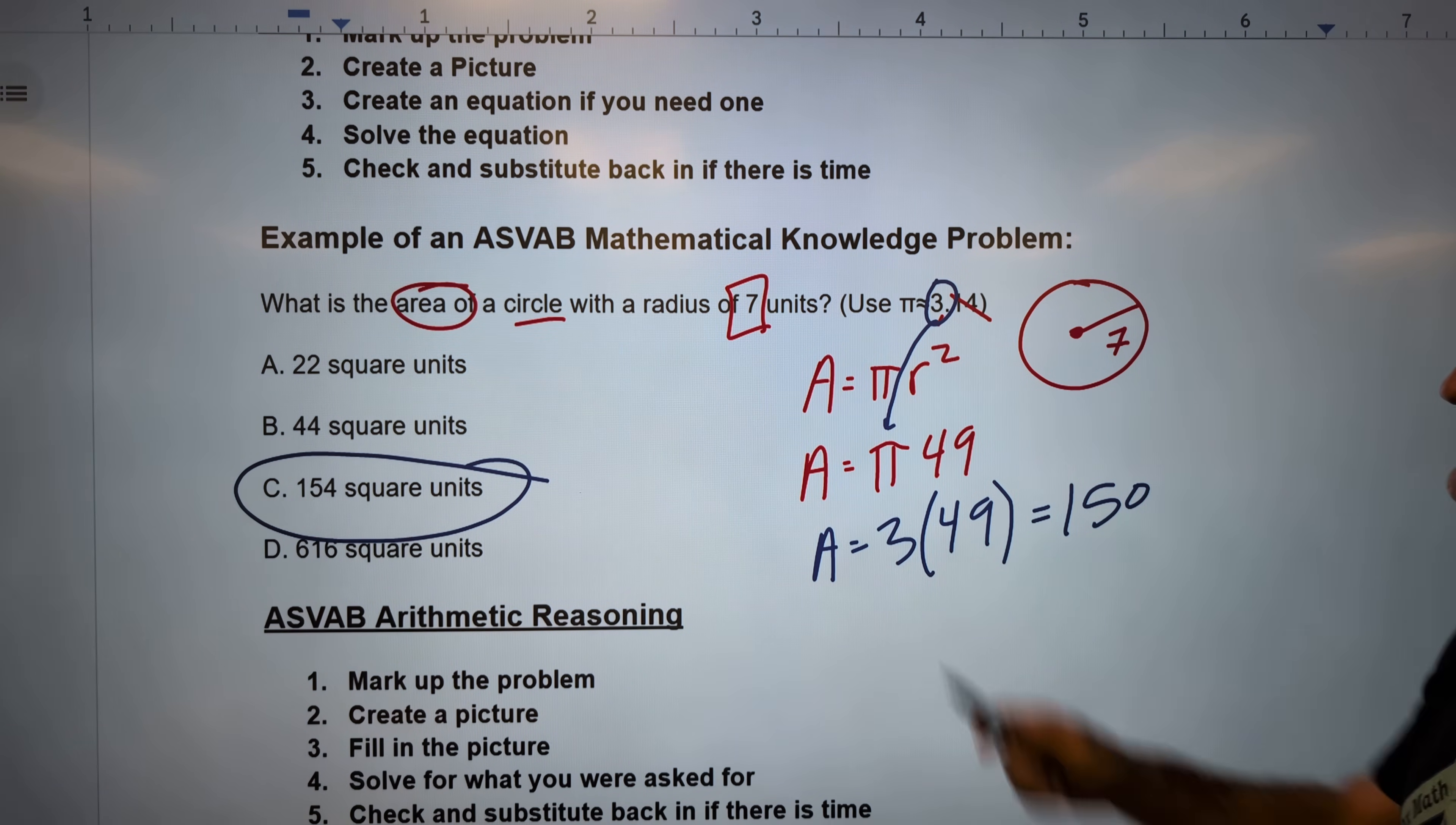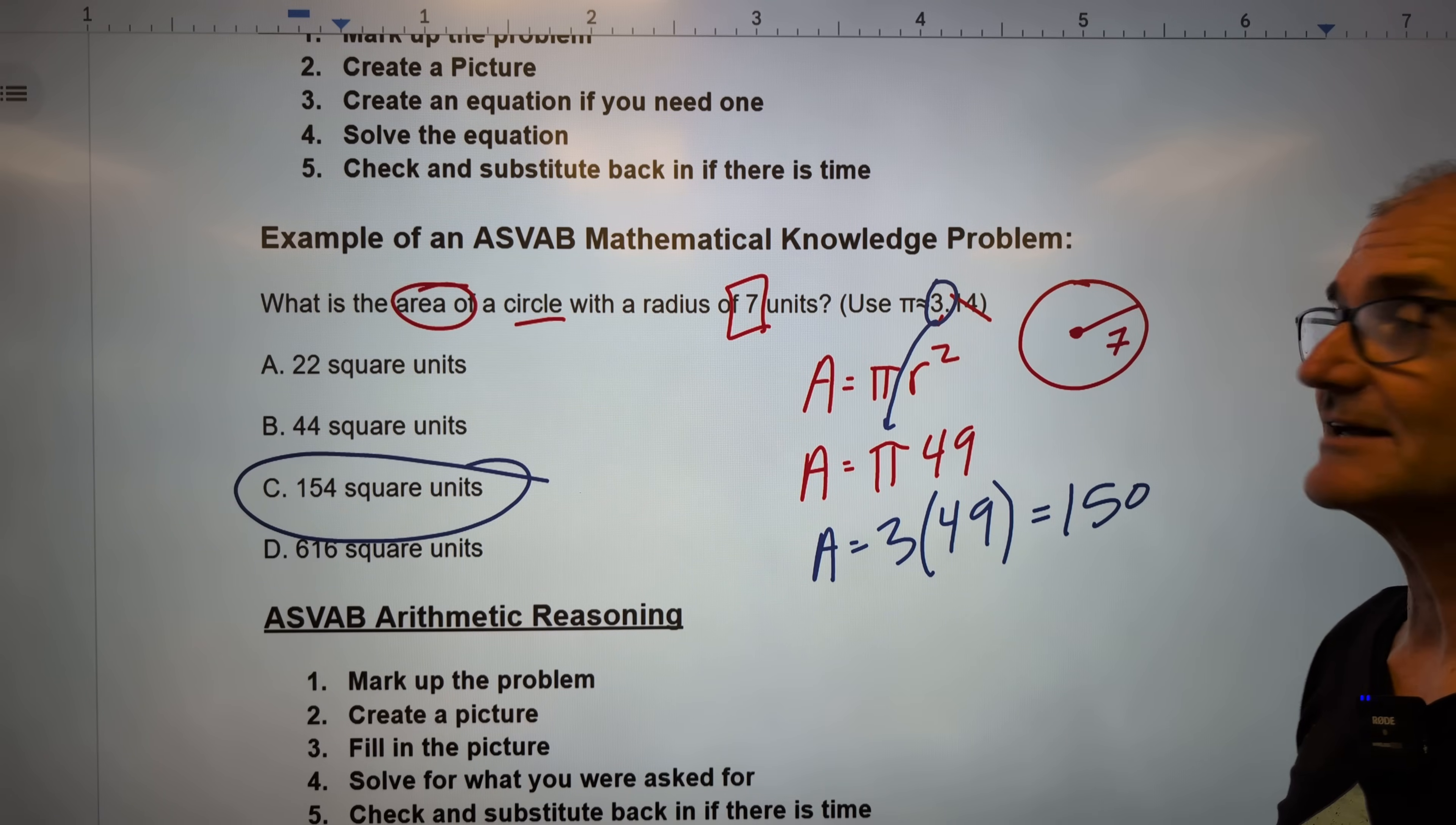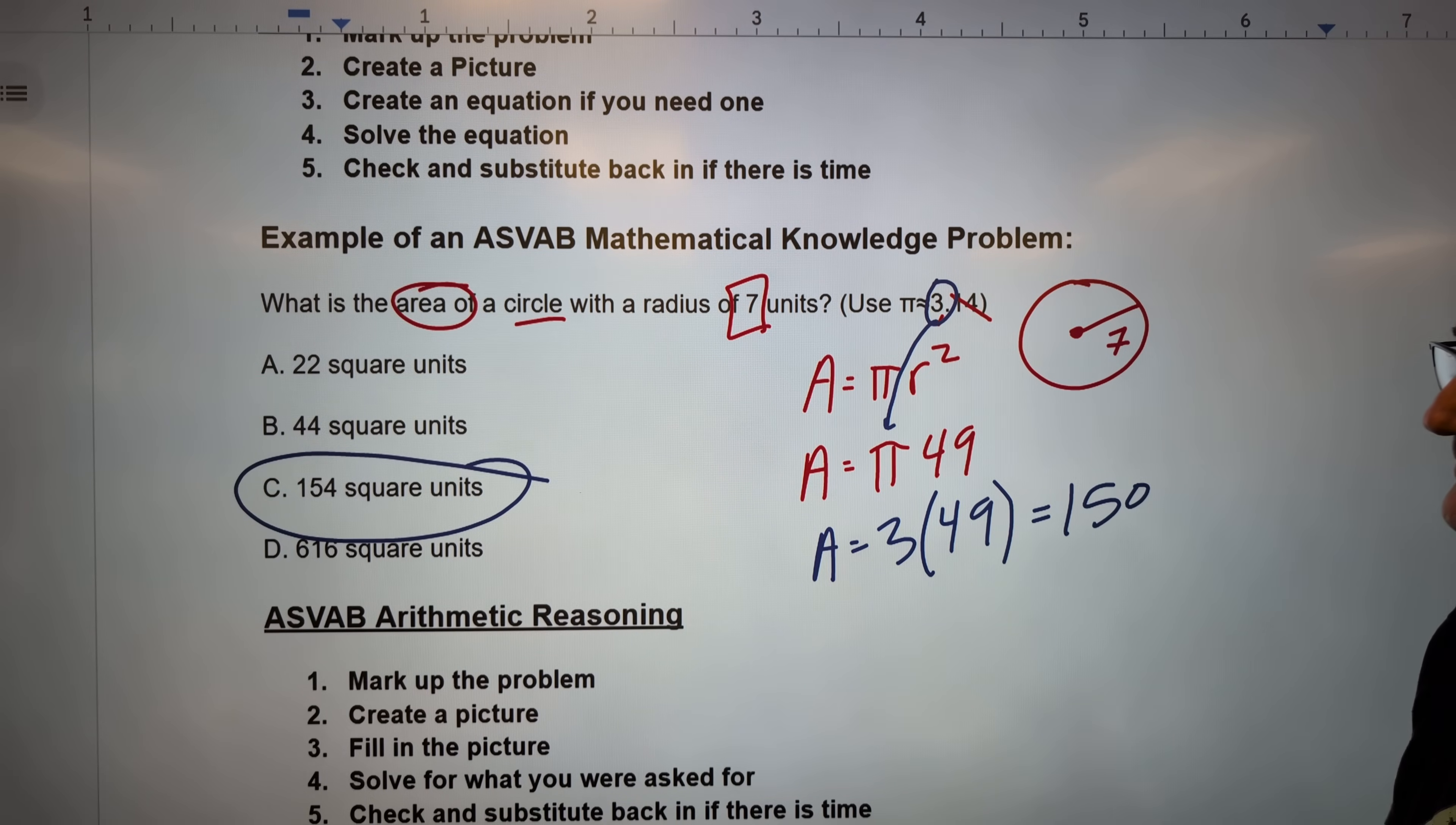Let me double-check that. What is the area of a circle with a radius of 7? Well, I squared it, times it by pi, and got 150. That's the correct answer. So there's my five-step process. It's a good example of a mathematical knowledge problem on the ASVAB because it's using equations that you need to know. And then my five-step process, mark up the equation, create a picture, use the equation, solve the equation, check.